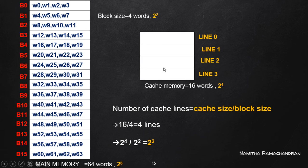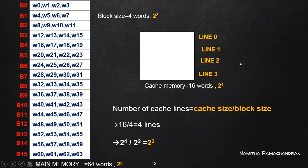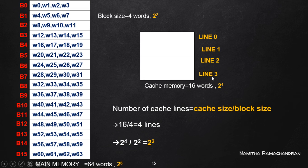We have 4 different cache lines, named line 0, line 1, line 2, and line 3. With a total of 4 cache lines, and since 4 equals 2 to the power 2, a minimum of 2 bits are required for addressing each of these cache lines uniquely. Keep all these properties in mind.